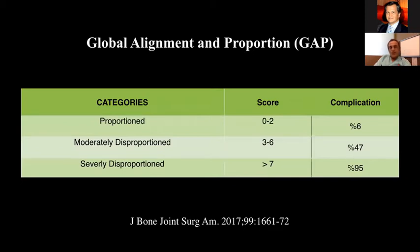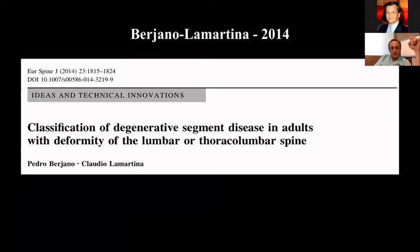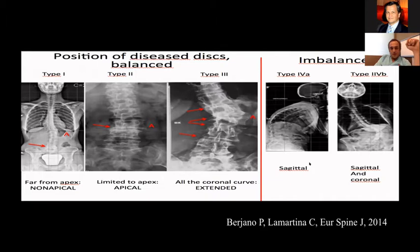If you sum all scores and have a score greater than seven, it means you may have 95% complications. We know from IB's classification about the etiopathogenesis of adult degenerative scoliosis, and we know the natural history. We nearly know something about ideal alignment, but ideal alignment is still a question mark — we still don't know where to start or where to stop. Lamartina published a paper in the European Spine Journal in 2014. The first three groups are the balanced group, the fourth is imbalanced. If a patient has sagittal imbalance, it's type IVA; if they have both sagittal and coronal imbalance, it's type IVB.